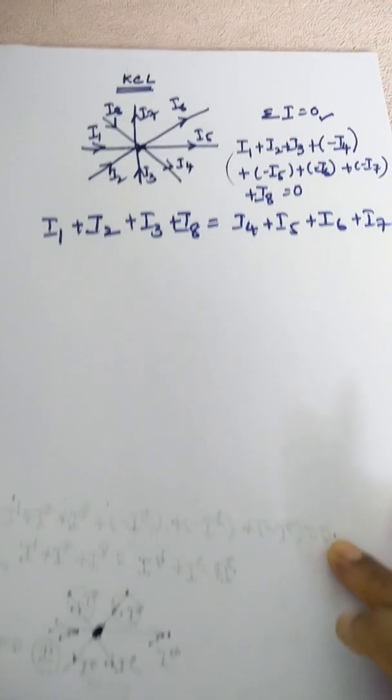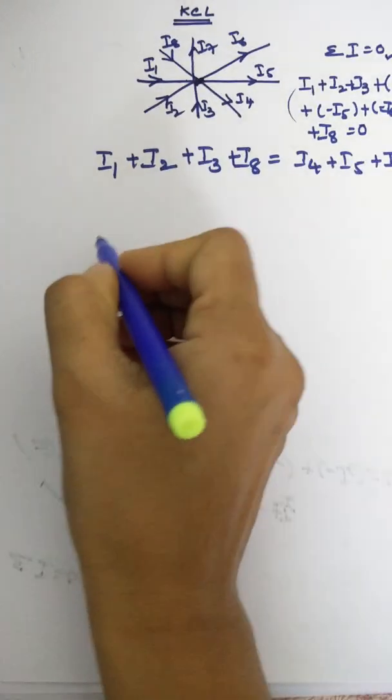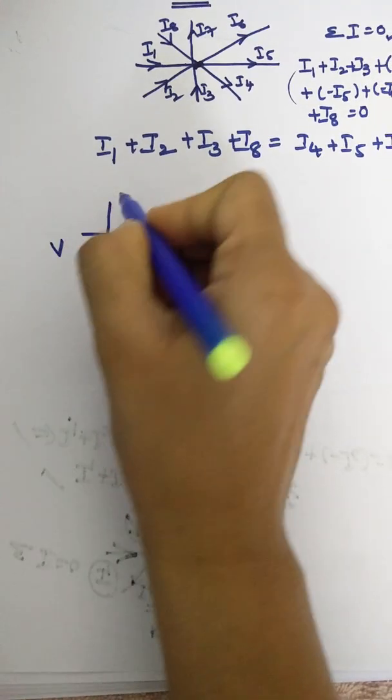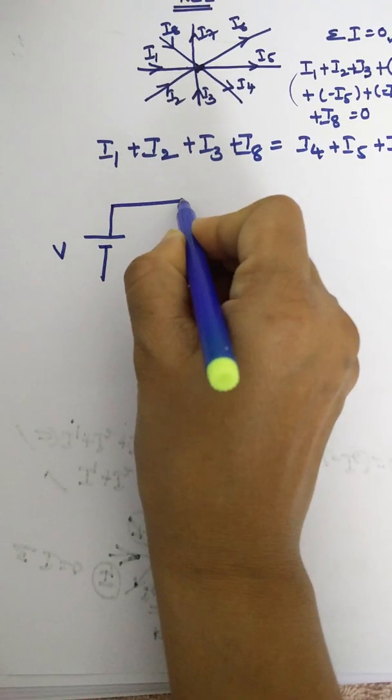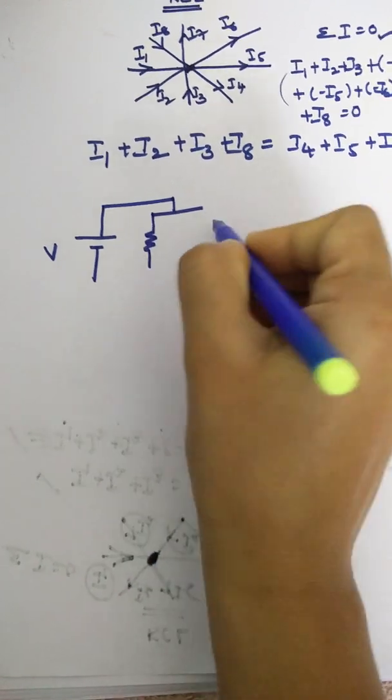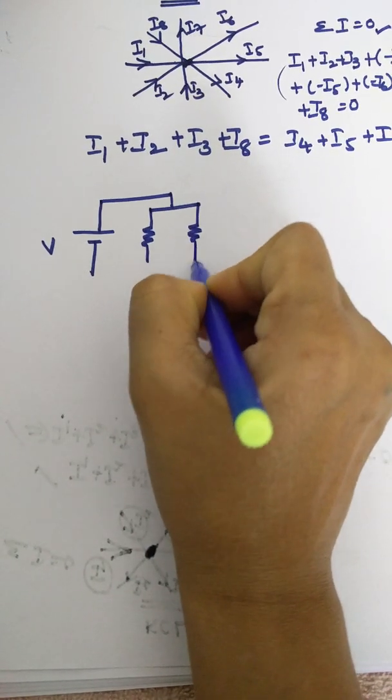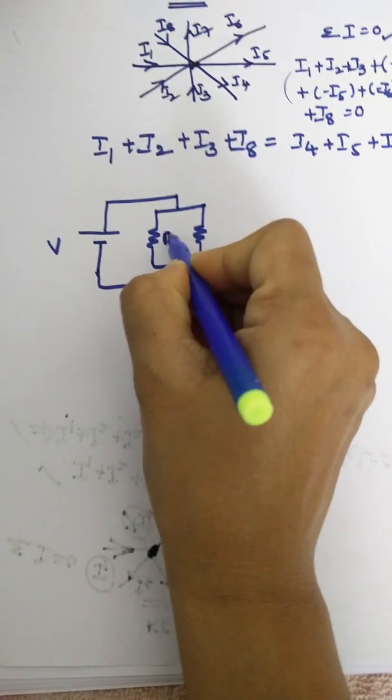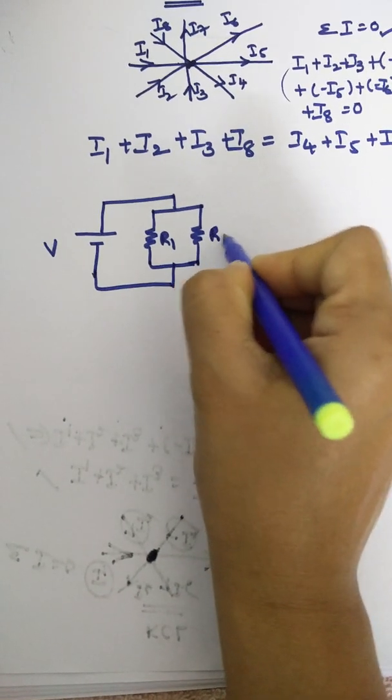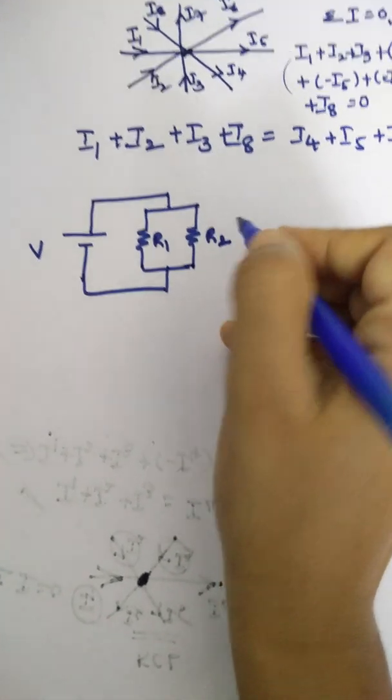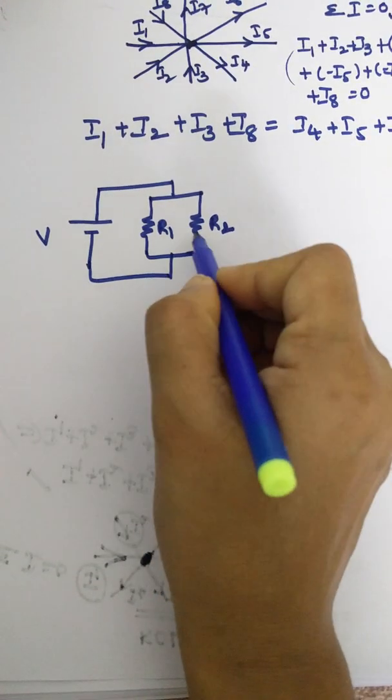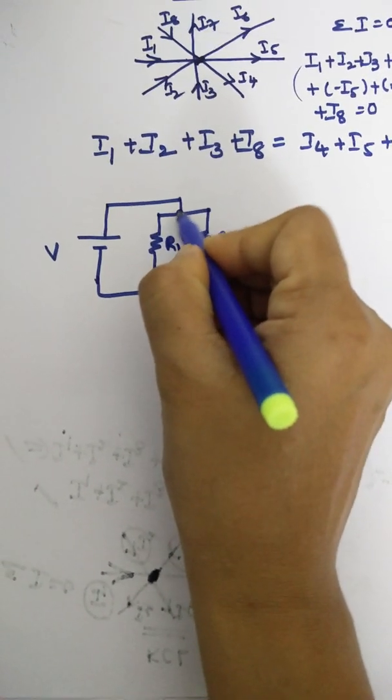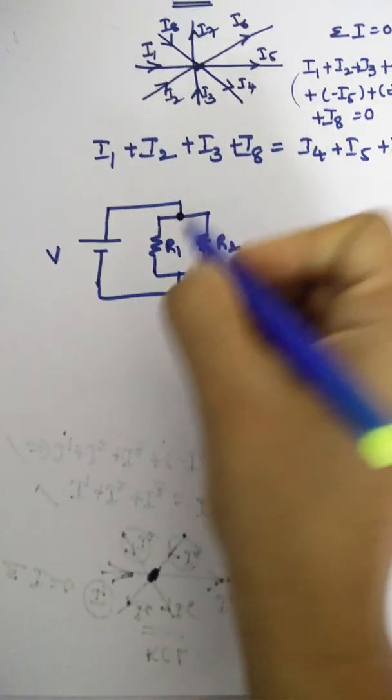So now let us have a simple problem. Here is a single voltage source V and two resistors are connected in parallel. Let us assume those resistors as R1 and R2. So how can you say that these two elements are connected in parallel? Here we need to understand about nodes.